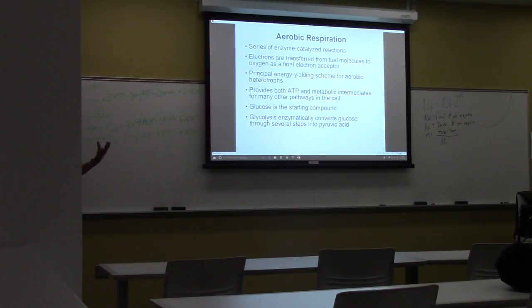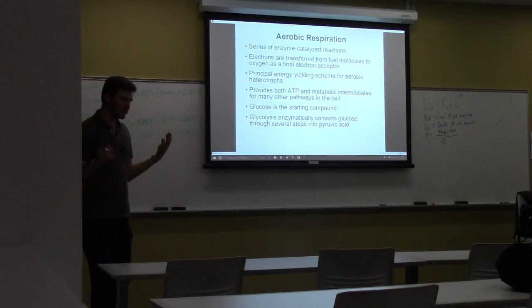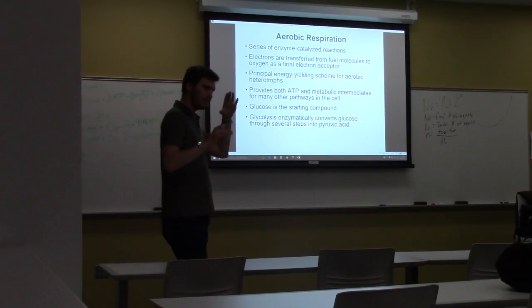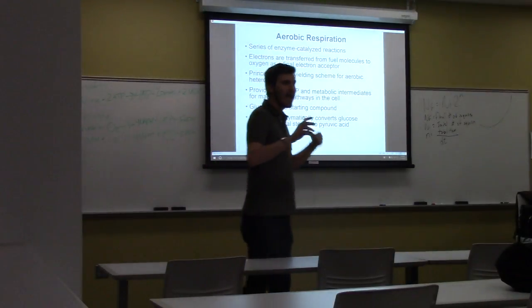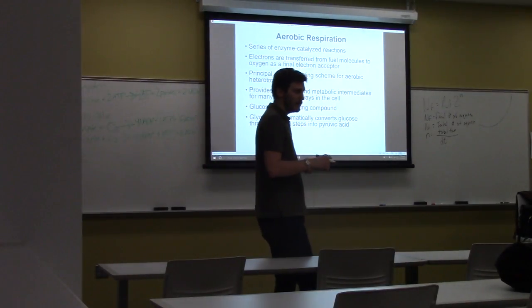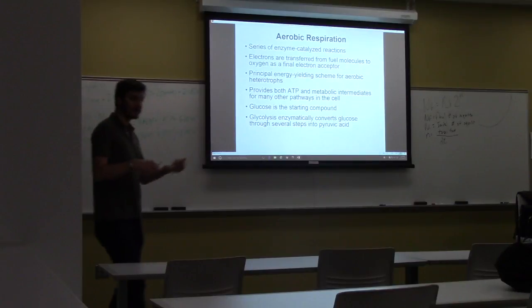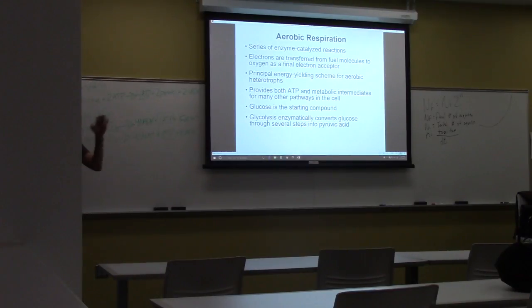And where does the electron transport chain happen? For eukaryotes, but more generally speaking, at a membrane. So for eukaryotes, it's the mitochondria. For prokaryotes, it's the cell membrane.